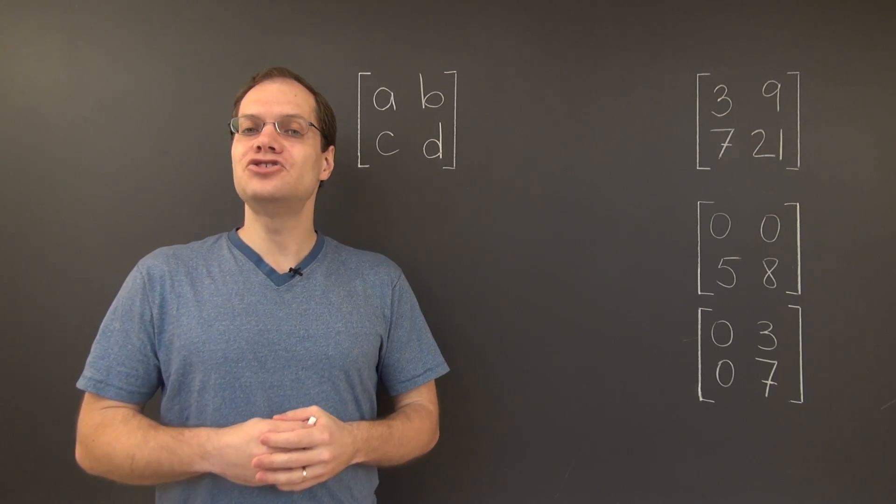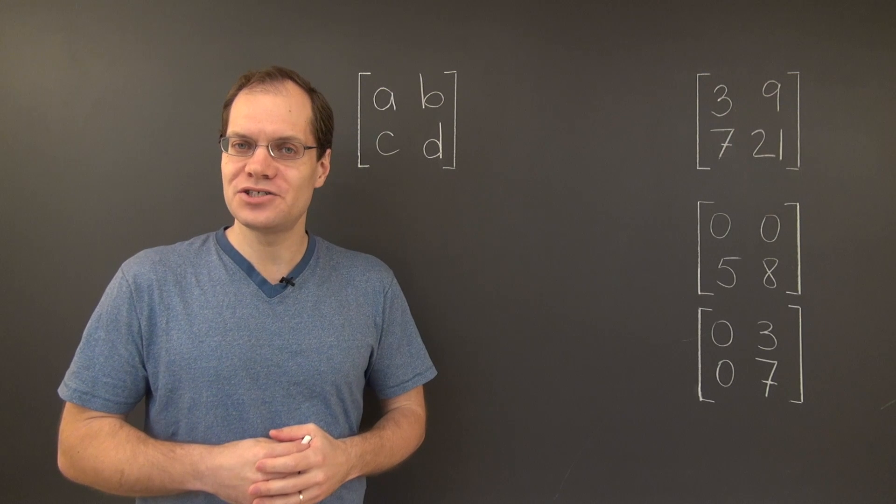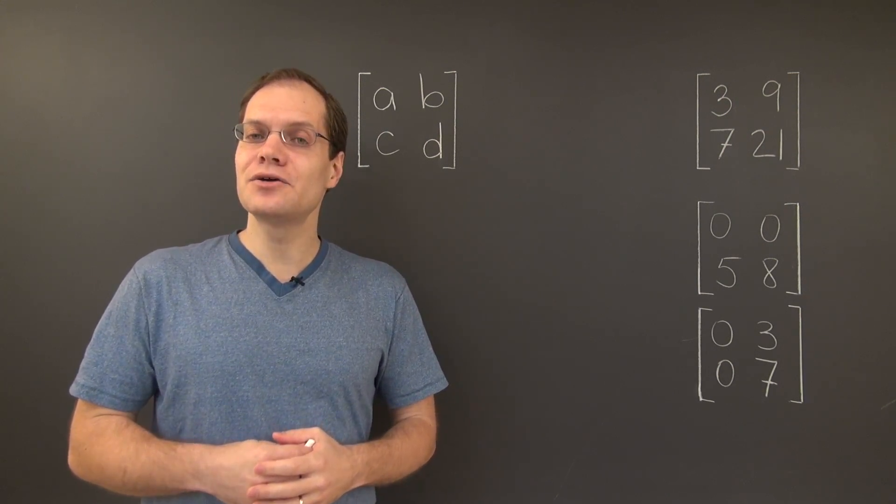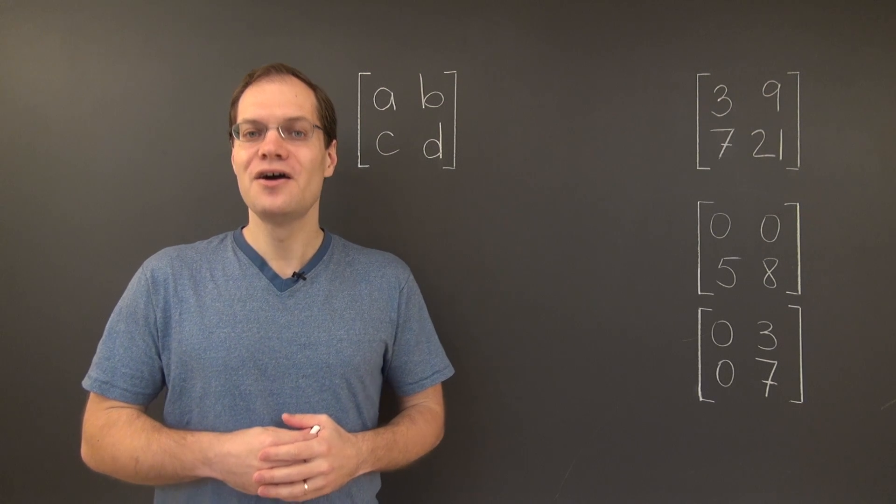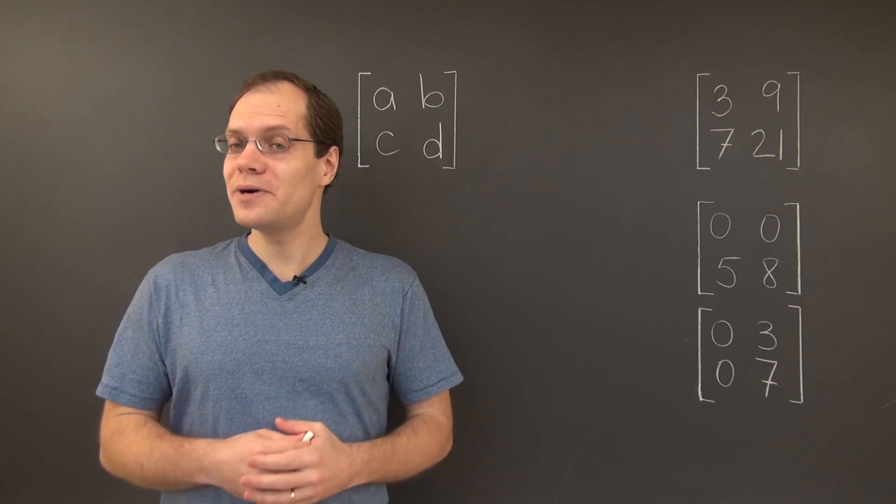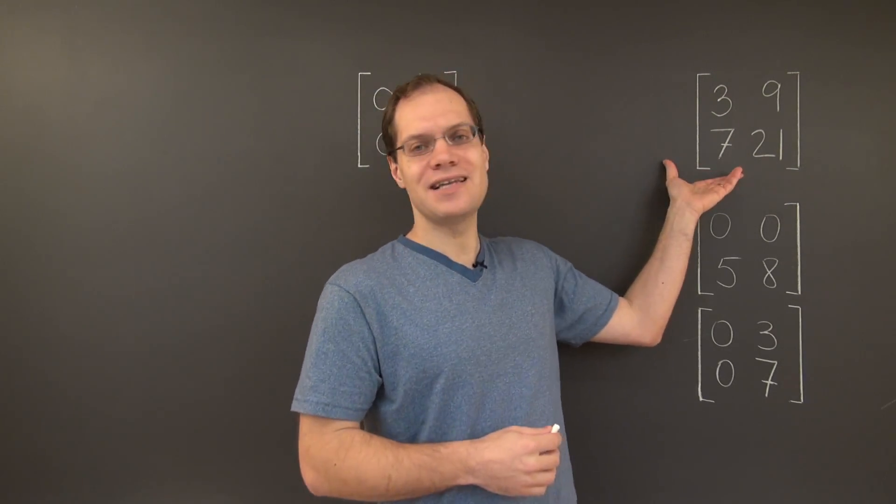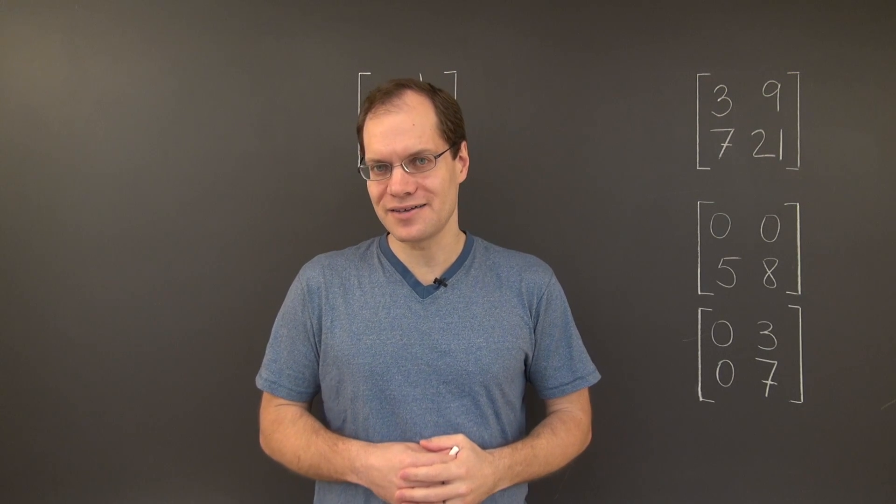We will now develop a general algebraic criterion for the columns of a 2x2 matrix to be linearly dependent, and the algebraic expression that we'll come up with will be the determinant. So when we see a 2x2 matrix with specific numbers, we pretty much know right away whether its columns are linearly dependent or not.